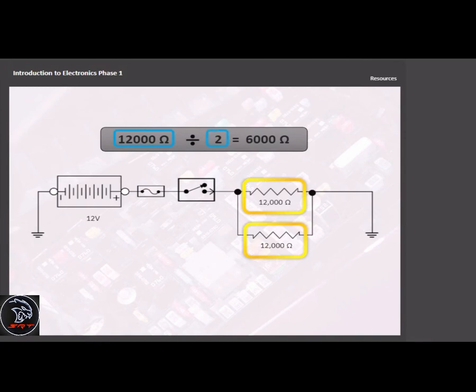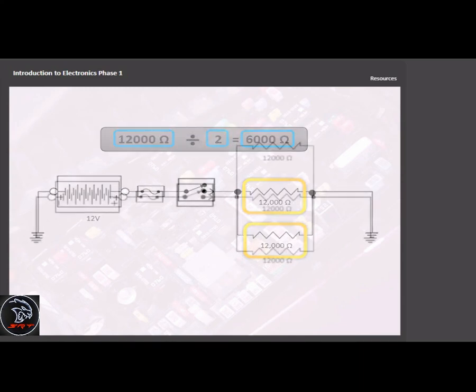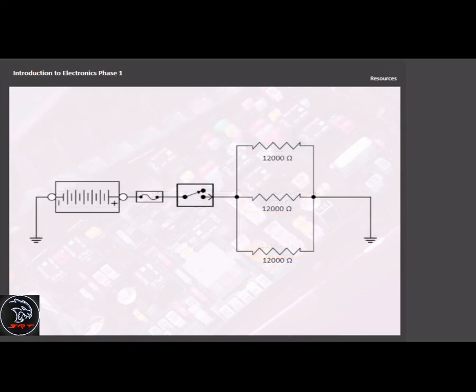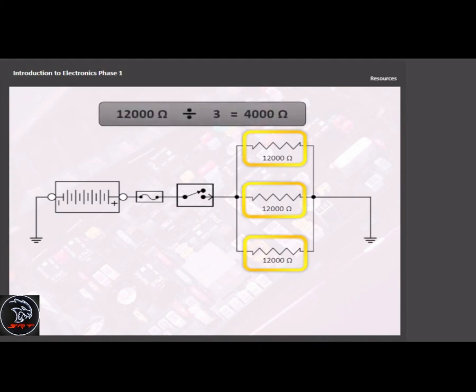In this example, the total load is three parallel 12,000 ohm resistors. Again, since the loads are the same, we divide the value of each load, which is 12,000 ohms, by the number of loads, which is 3, to calculate the total circuit resistance. In this case, the result is 4,000 ohms.